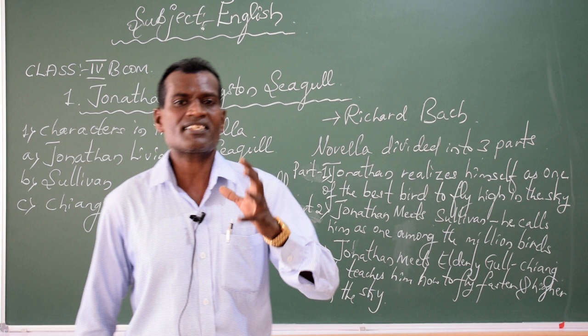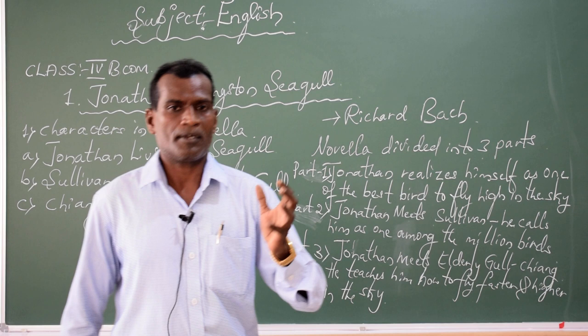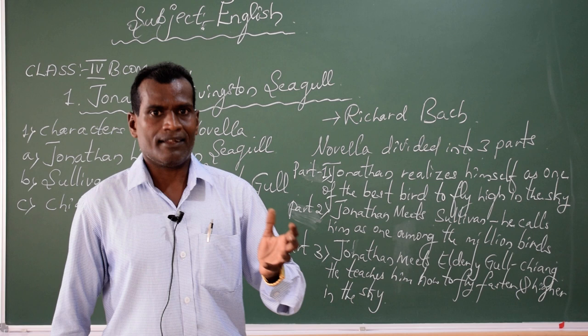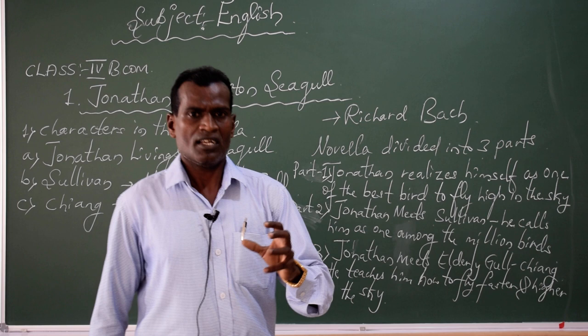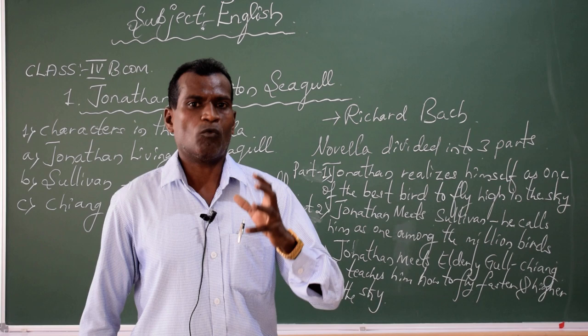A novella is a very small, neatly described piece of literature. It is not bigger than a novel and it is not smaller than a poem or a lyric. Today I would like to talk about Jonathan Livingstone Seagull. This novella brings out a curiosity and spiritualism — how to attain one's goal in our lifetime.